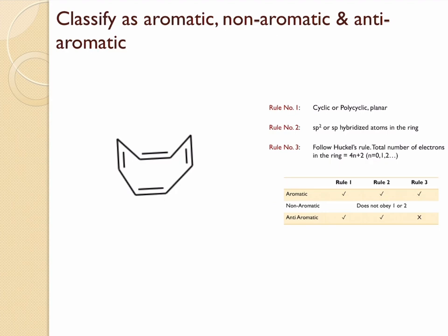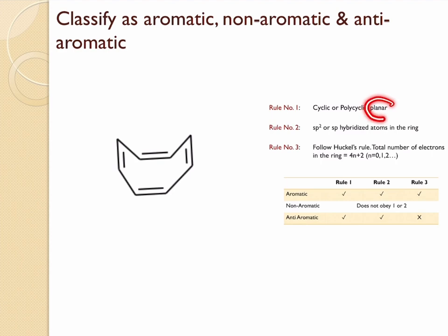The next compound is cyclooctatetraene. The structure is cyclic and all atoms are sp2 hybridized, but these atoms are not on the same plane. So although it is cyclic, it is not planar — rule one is disobeyed — and therefore cyclooctatetraene is a non-aromatic compound.